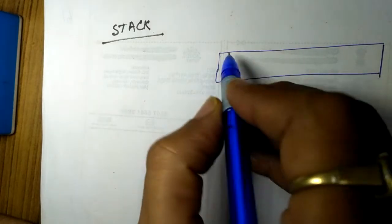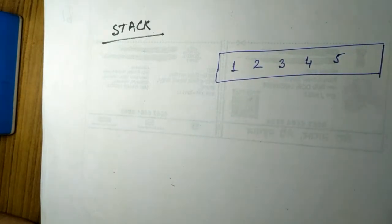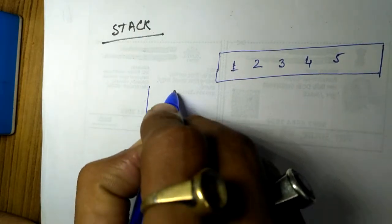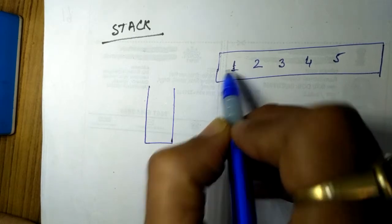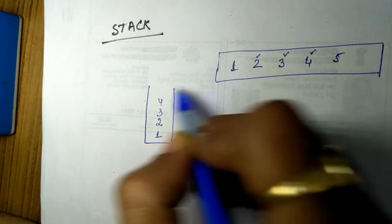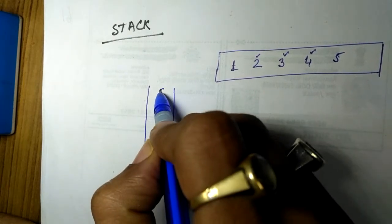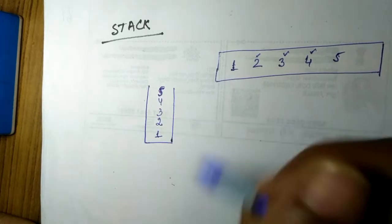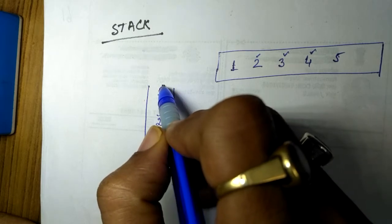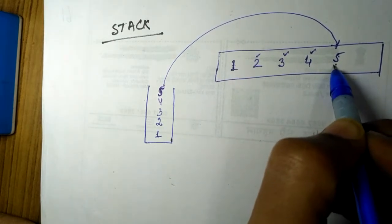We will discuss about stacks in this lecture. Suppose there are five students sitting in the front row of a class. A teacher has asked them to submit their notebooks starting from student number one. The teacher first collects the notebook of student number one, then student number two, then student number three, then student number four, and then student number five. At the top of his hand, the notebook is of student number five. The teacher then returns these notebooks back to the students, picking the notebook of student number five and returning it back to him.